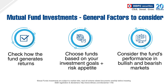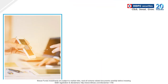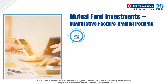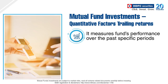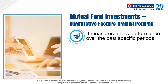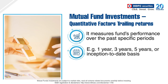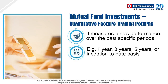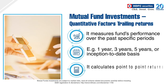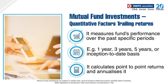Now, let's look at the quantitative factors. You should check out the fund's trailing returns, which is essentially a measure of the mutual fund's performance for the past specific periods. For instance, how the fund performed in the past one year, three years, five years, or from the time of inception to present day. Basically, trailing return is a calculation of point-to-point returns and analyzing them.